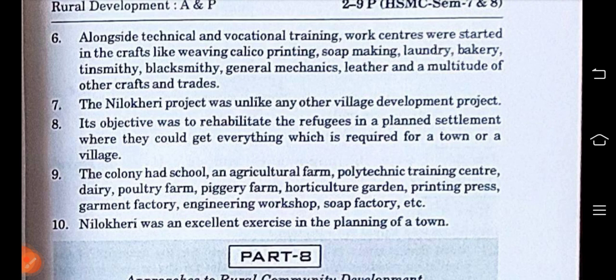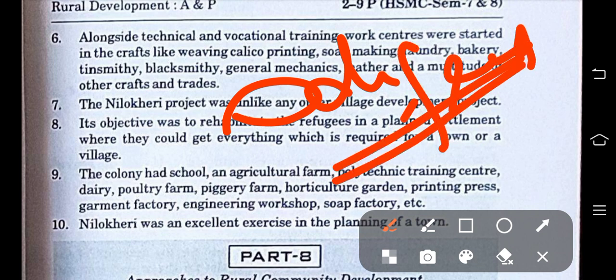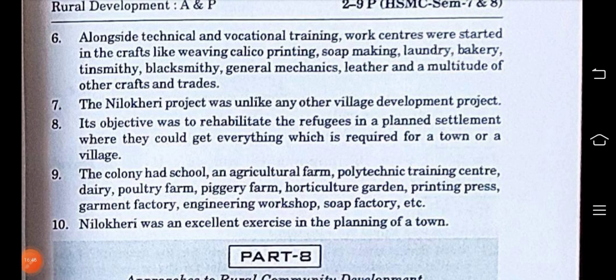The seventh point states that the Nilokheri project was unlike any other village development program — it was different from other village development projects. In other cases, people are already living there and what is needed is to develop them; they have their homes and shelters. But here, these people had lost everything. This program had to start from zero level — they have nothing and now they are working to get everything.